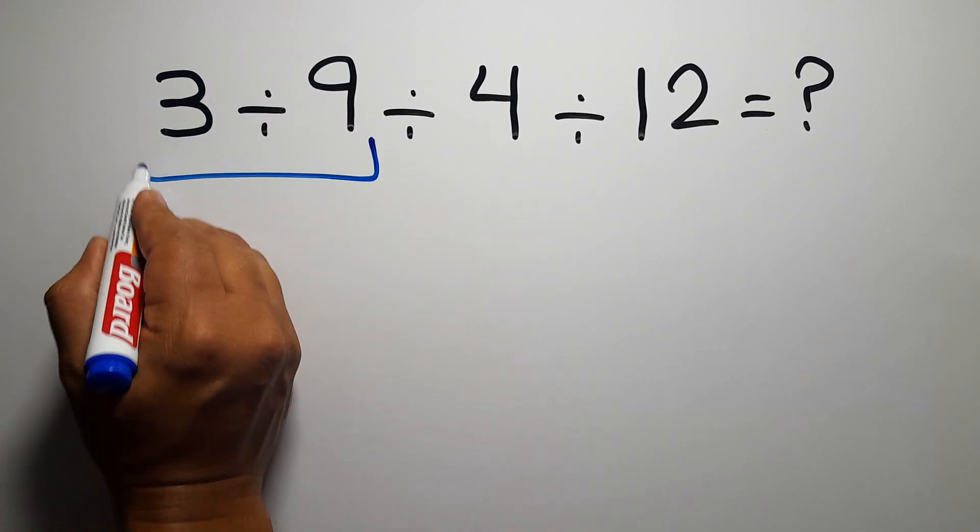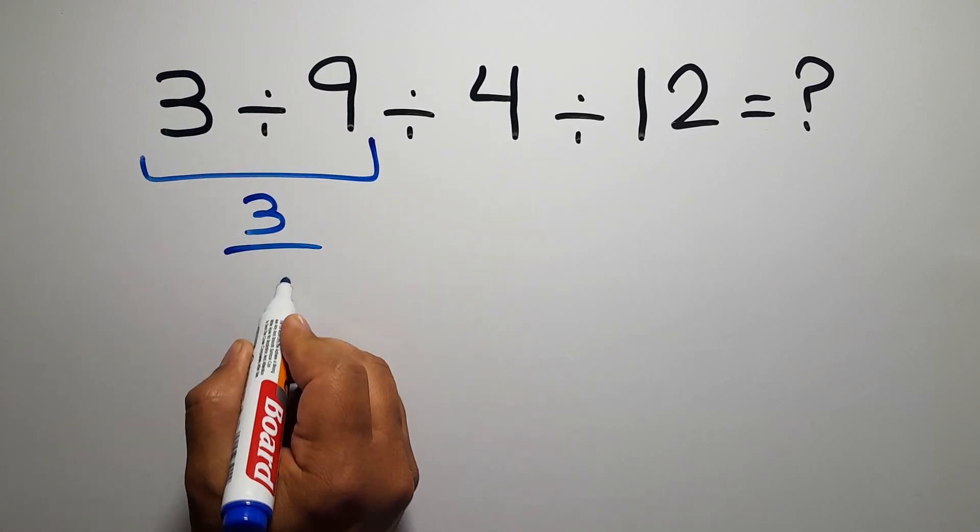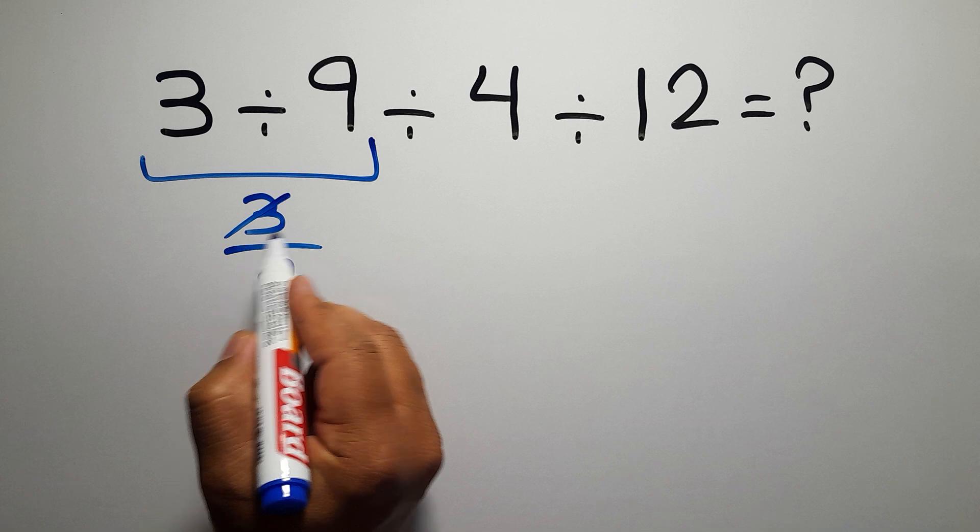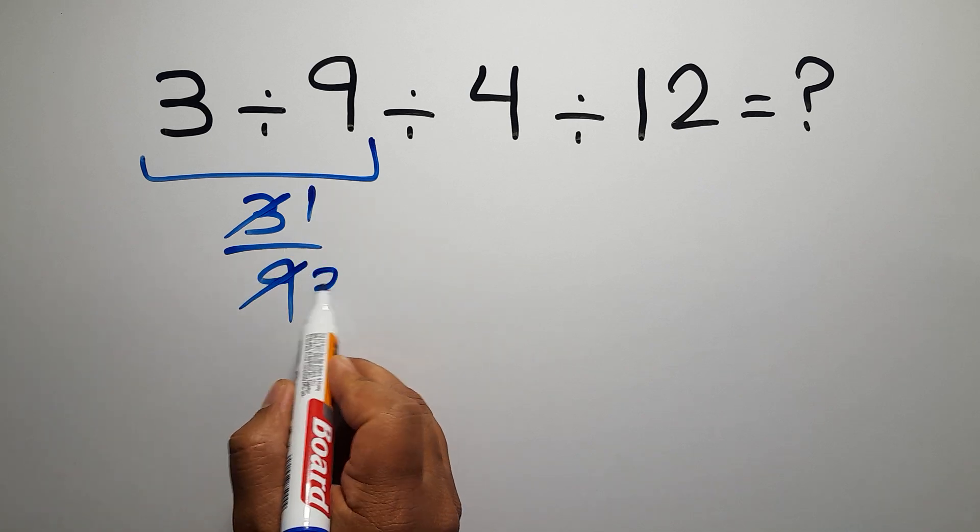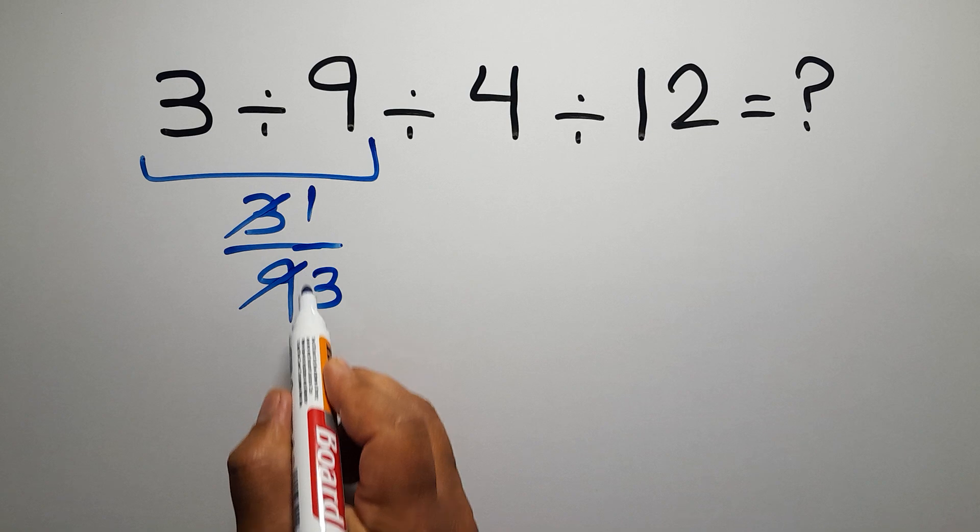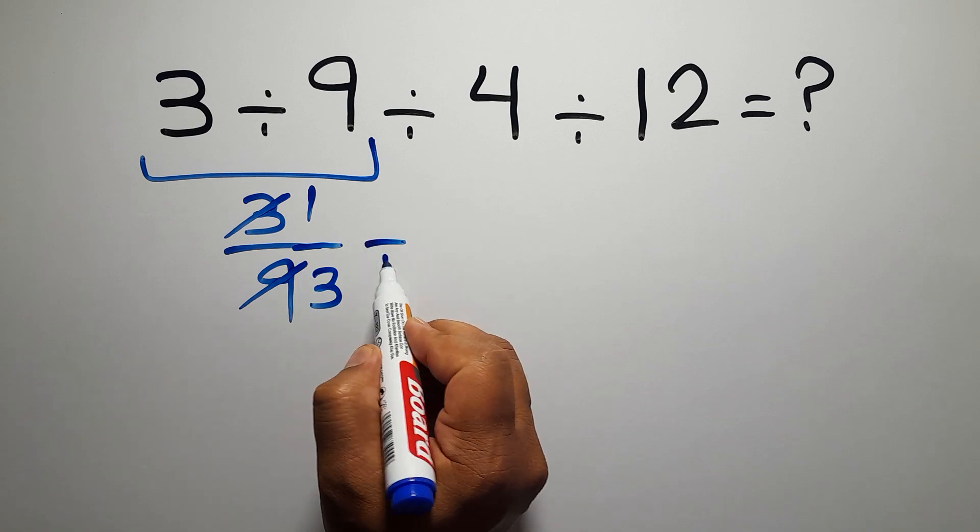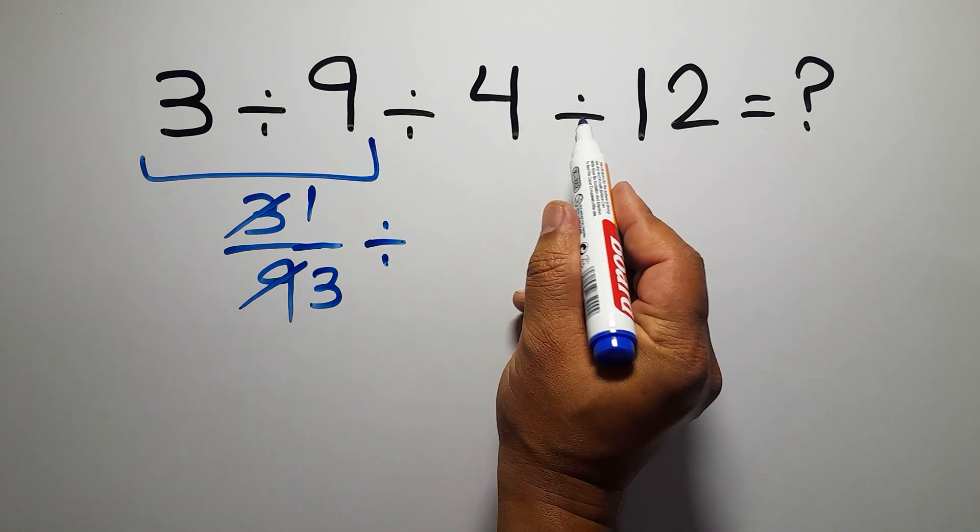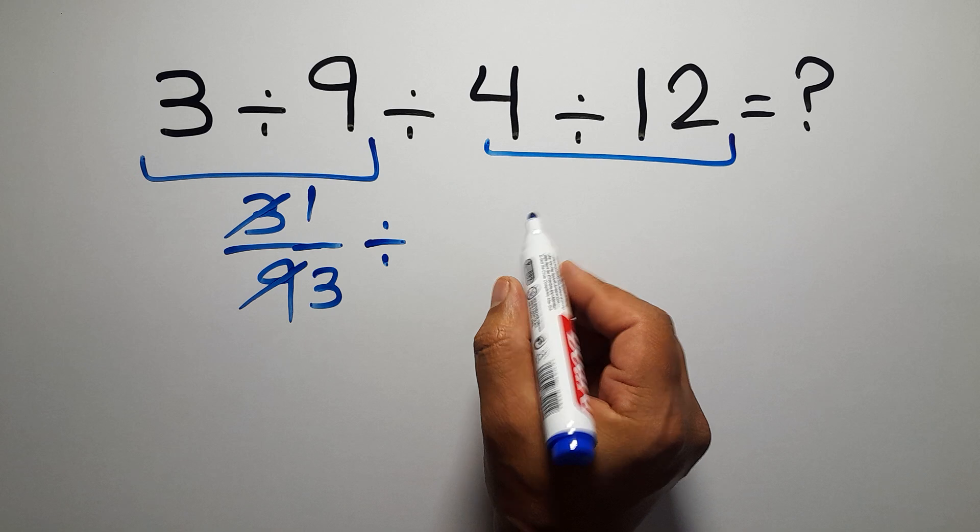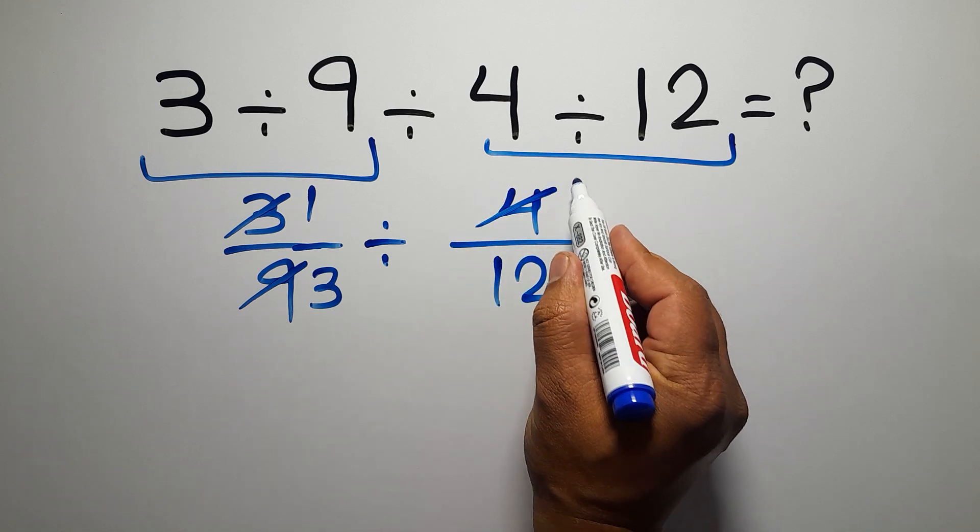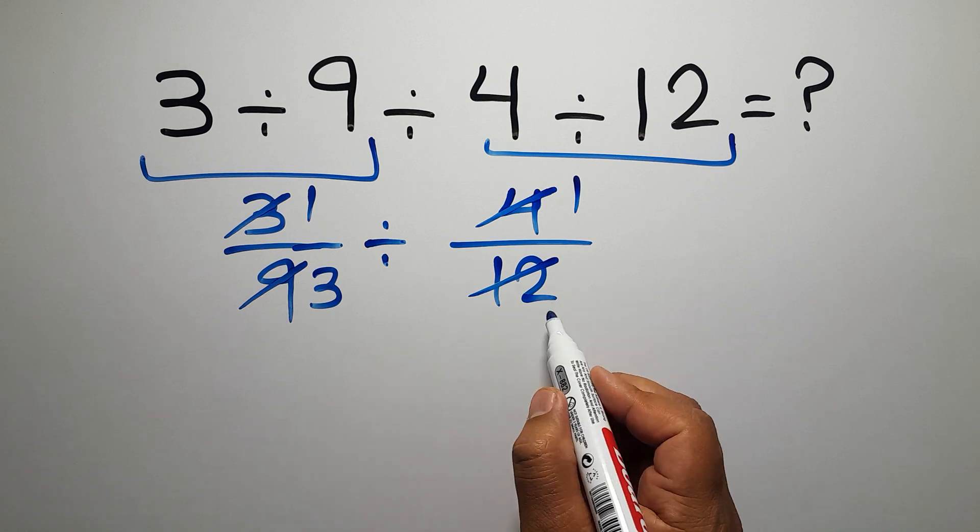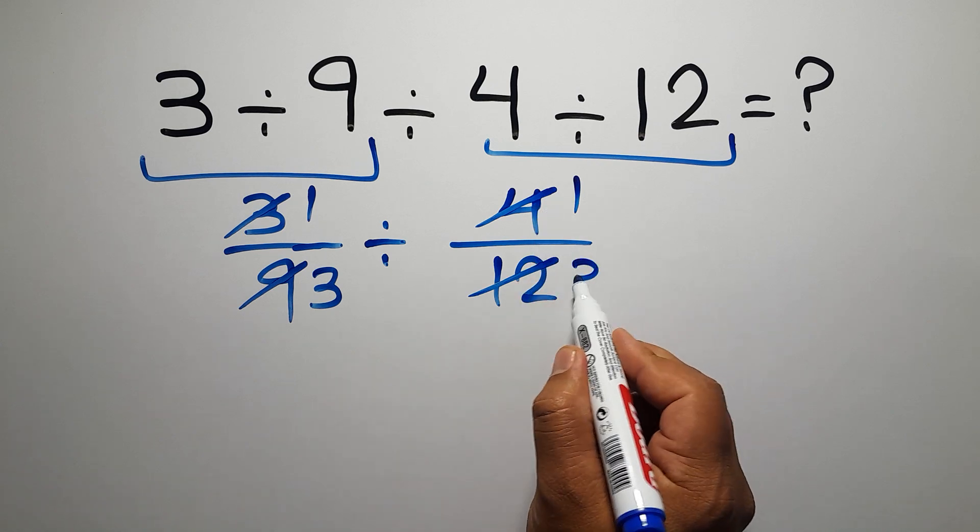3 divided by 9 can be written as 3 over 9, and 3 divided by 3 equals 1. 9 divided by 3 gives us 3. So we have 1 over 3 divided by... here we have 4 divided by 12. We can write 4 over 12. 4 divided by 4 gives us 1, and 12 divided by 4 gives us 3.